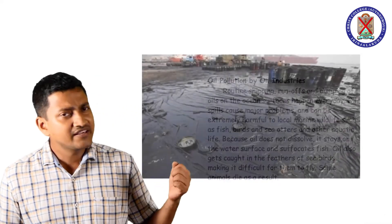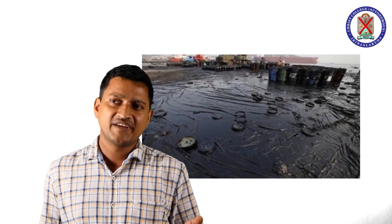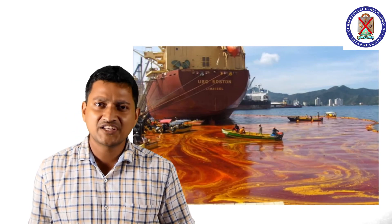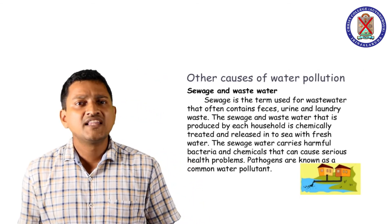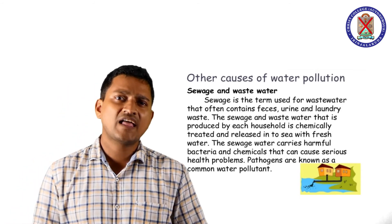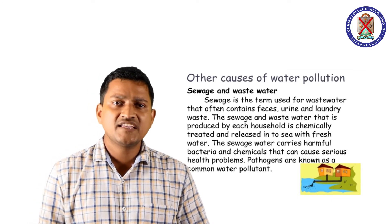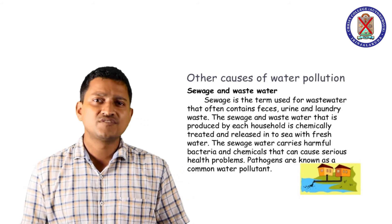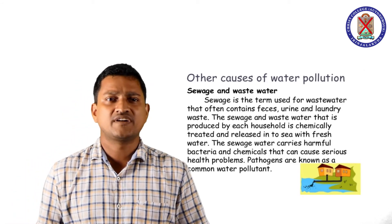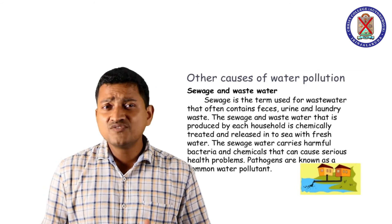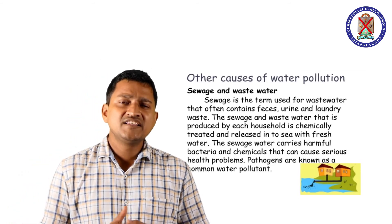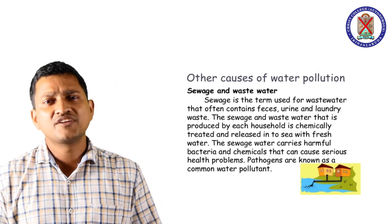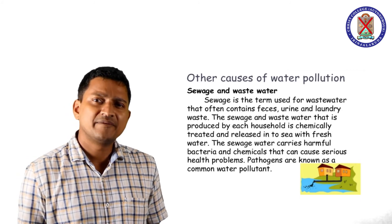These pictures show oil pollution and oil leakage from a ship. Another cause of water pollution is sewage and wastewater from household activities. Sewage is the term used for wastewater that often contains waste matter, urine and laundry waste. The sewage and wastewater produced by each household is chemically treated and released into the sea with fresh water. Sewage water carries harmful bacteria and chemicals that can cause serious skin problems, and pathogens present in the water cause different types of waterborne diseases to plants, animals and human beings.